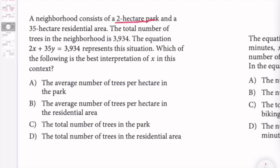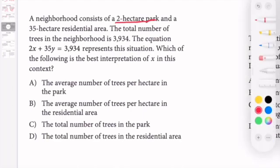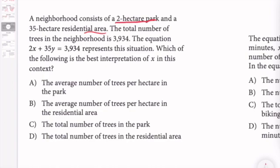This is a 2-hectare park and a 35-hectare residential area. Let me just get my pen. The total number of trees in the neighborhood is 3,934.